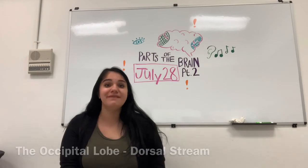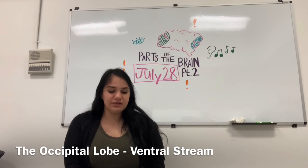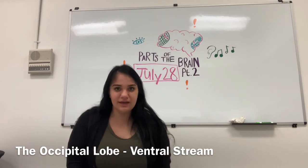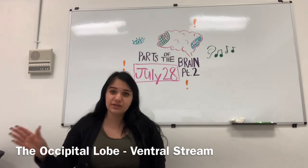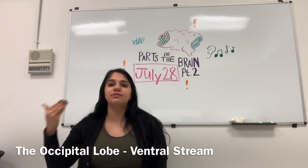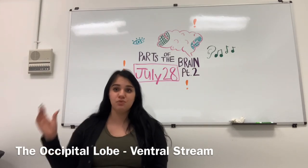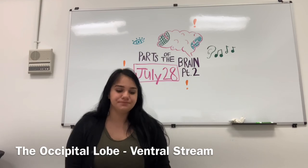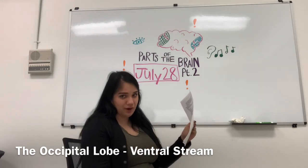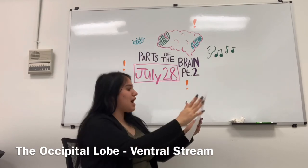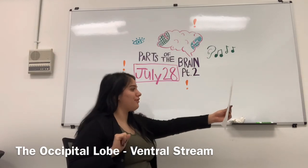The second part is called the ventral stream. The ventral stream helps us process what we are seeing — what is in our line of vision. As a child, we begin to familiarize ourselves with different objects, and the more we grow, the more objects we are able to remember and comprehend. Our ventral stream is what associates those memories of objects with what we are currently seeing. For example, I'm seeing a piece of paper right now — my ventral stream allows me to recognize it as paper, while my dorsal stream tells me it is one arm's length away and it is white.